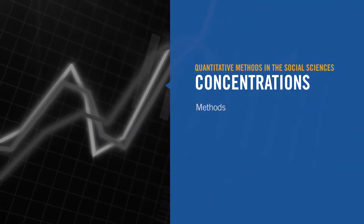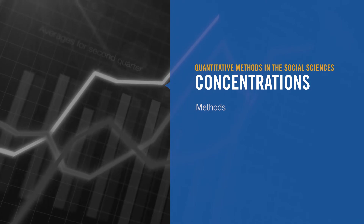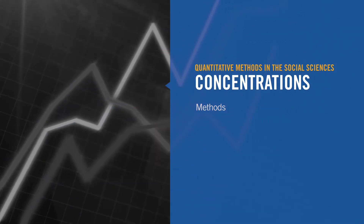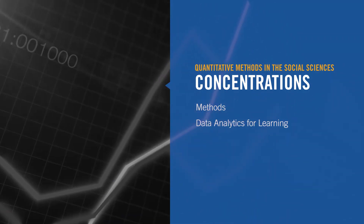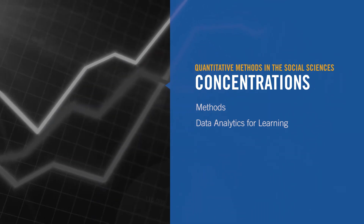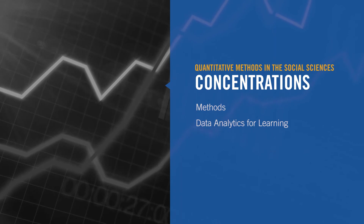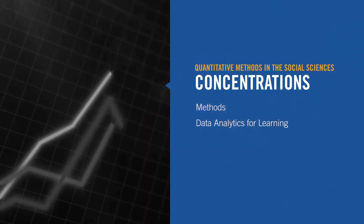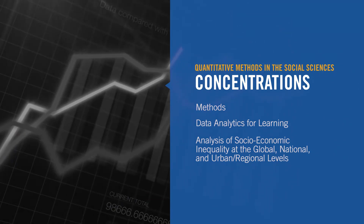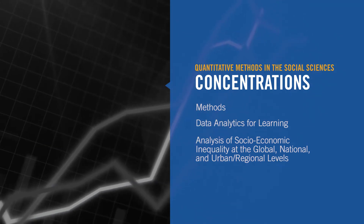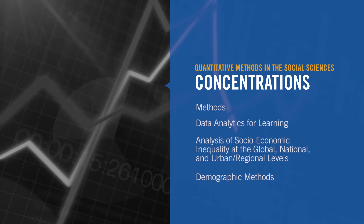The program has four different concentrations. There's a generic methods program, which entails ten courses of just methodological training — students can take any courses they want after our foundational classes. There's an analytics for learning track for students interested in using data to understand how students learn or how to effectively communicate information within the field of education. We have a social inequalities track, and an economic inequalities track at the local, regional, and national level, which combines the Urban Research Center and the Stone Center for Economic Inequalities. We also have a demography track, which is associated with the CUNY Institute for Demographic Research. All four tracks are fairly flexible, but we do have a good group of professors in each track.